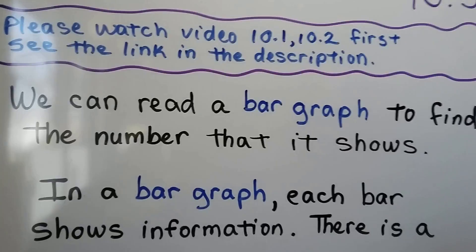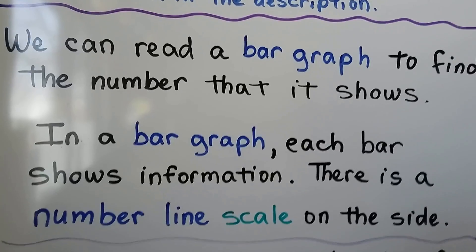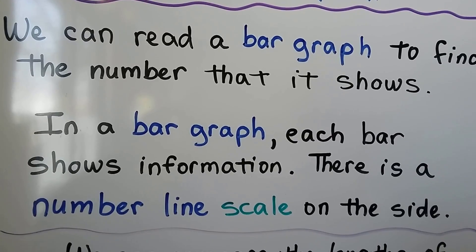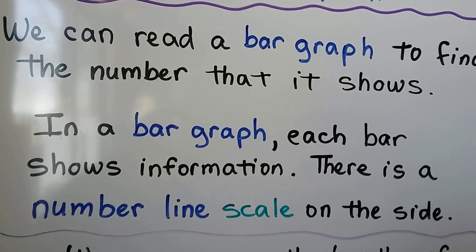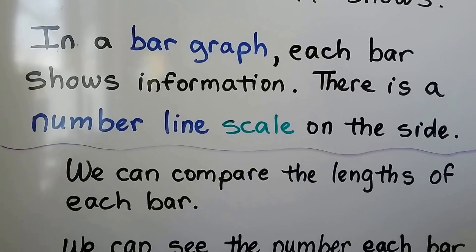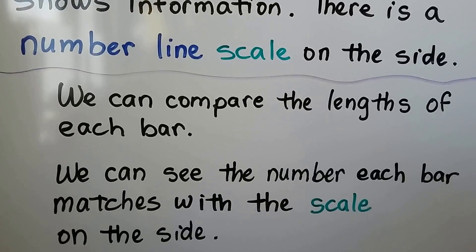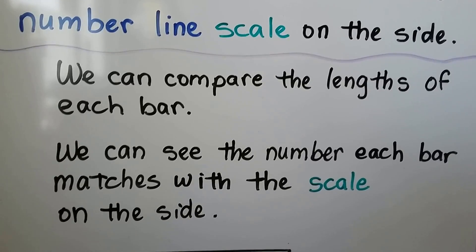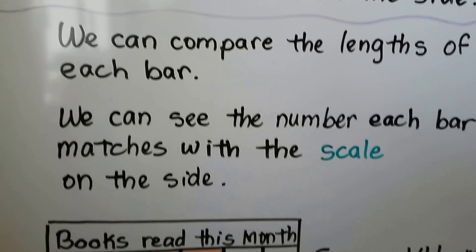We can read a bar graph to find the number that it shows. In a bar graph, each bar shows information. There's a number line scale on the side. We can compare the lengths of each bar and we can see the number each bar matches with the scale on the side.